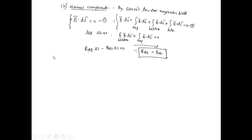Similarly, for normal components using Gauss's law for magnetic field, since magnetic field lines are closed, ∮ B bar · dS bar = 0. Applying this to the cylindrical pill-box with top, bottom, and side surfaces, as the height tends to zero the side contribution vanishes. Applying the limit gives B-n2 × dS − B-n1 × dS = 0, therefore B-n2 = B-n1: the normal components of the magnetic field are equal.